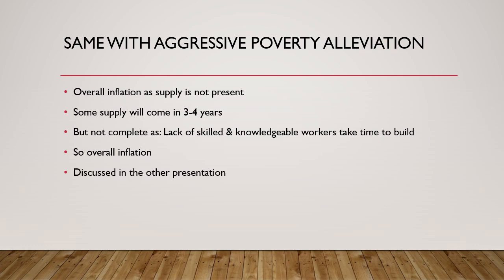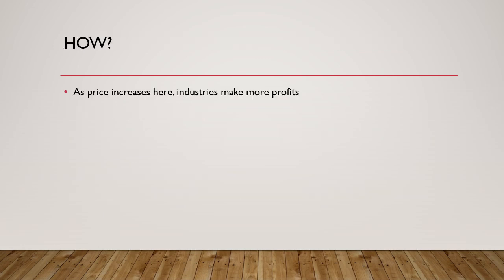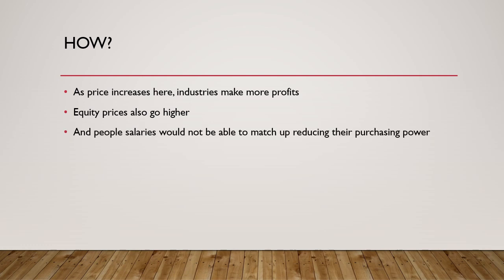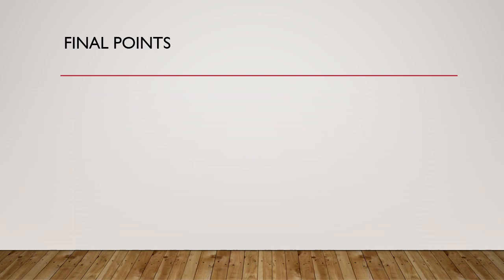Inflation overall in the economy, if it goes on for a longer time, leads to one thing: wealth transfer from the poor and middle class to asset owners, who are usually rich people. As prices increase, so does the profitability of industries, and with increased profitability, equity prices go higher. Salaries would increase to some nominal extent but not enough to compensate for the lost purchasing power — except in some niche areas. That means overall, asset owners gain at the expense of poor and middle-class people.